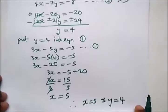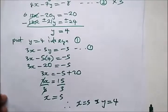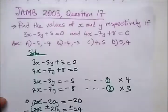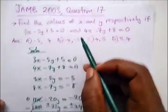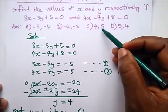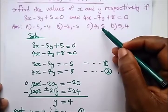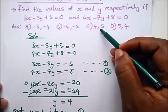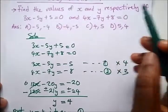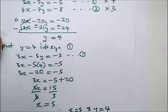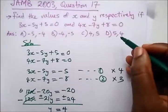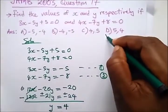We have to be careful in JAMB — don't confuse your options. The question asks for x and y respectively. You might see an option with 4 and 5, but since x equals 5 and y equals 4, the correct option is option D.